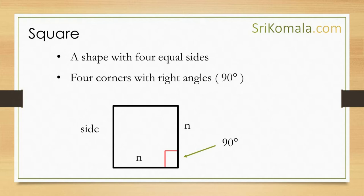First of all, let us discuss what a square is. A square is a shape with 4 equal sides and 4 corners that are all right angles, or 90 degrees. The shape of a square can be seen in the figure shown in this slide. Let us call the side as n.